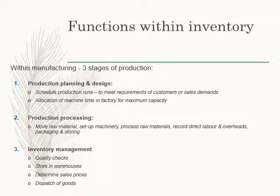On the slide there are some examples of controls for the inventory management phase, including quality checks, the condition of your warehouses, how sales prices are determined, and how goods are dispatched. So those are your three phases in terms of controls: production planning and design, production processing, and inventory management.